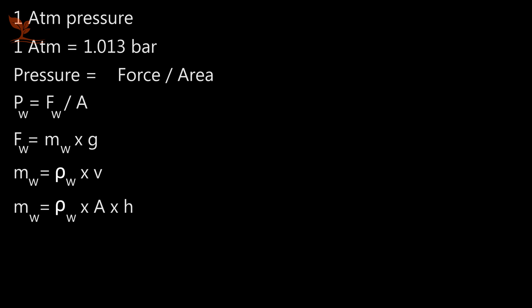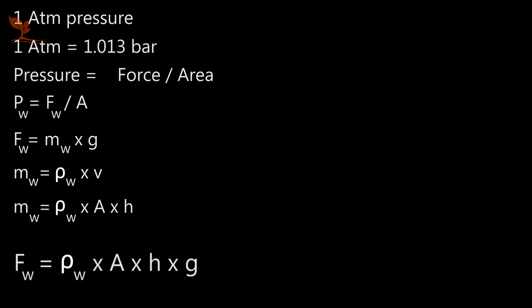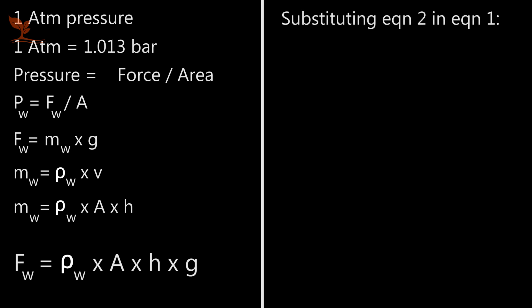We know that MW equals FW. Now we substitute FW in the equation. The force exerted by the water FW equals Rho into A into H into G — that is Rho_W into A into H into G. Now we simplify it and substitute FW in the pressure equation: P_W equals Rho·A·H·G divided by A.